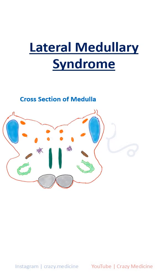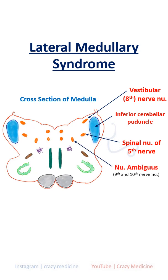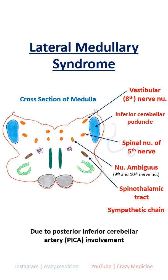The lateral structures involved are: the vestibular nucleus, inferior cerebellar peduncle, spinal nucleus of the trigeminal nerve, nucleus ambiguus, the lateral spinothalamic tract, and the sympathetic chain. It occurs due to involvement of the posterior inferior cerebellar artery.